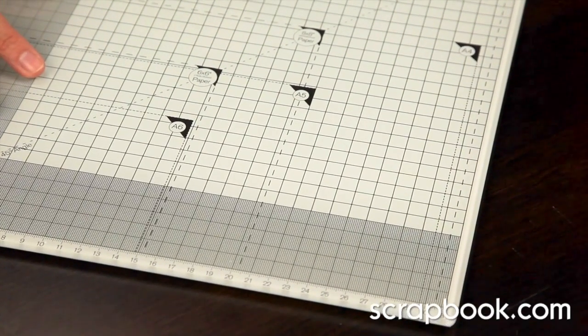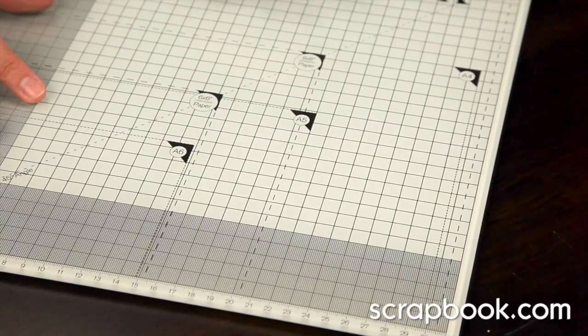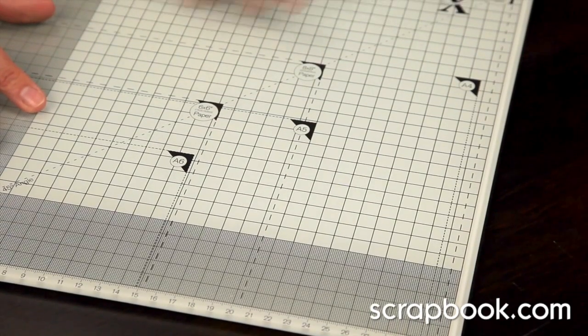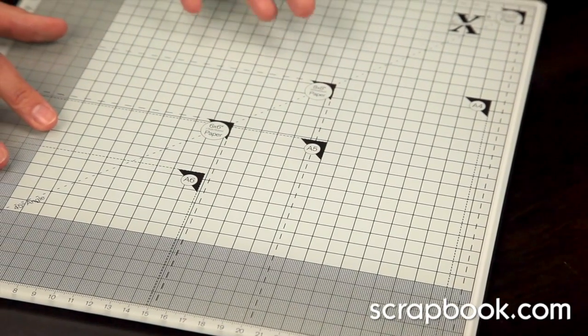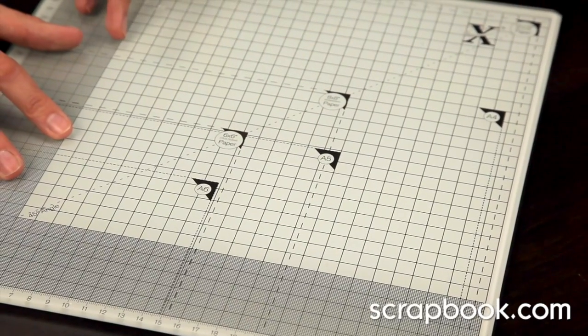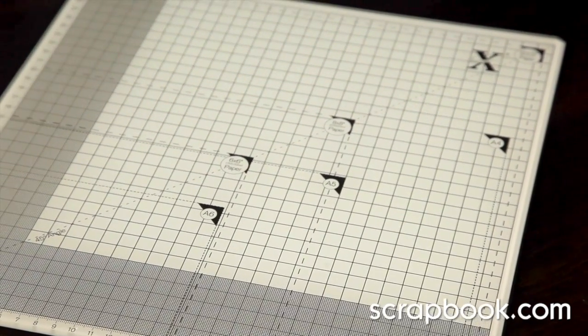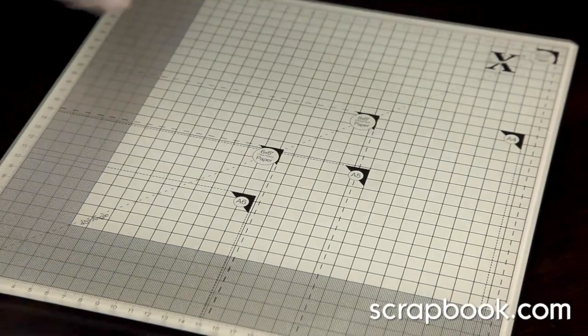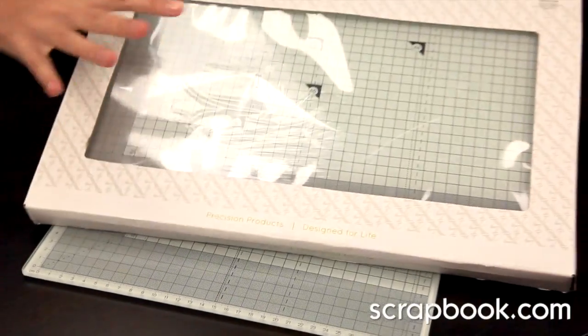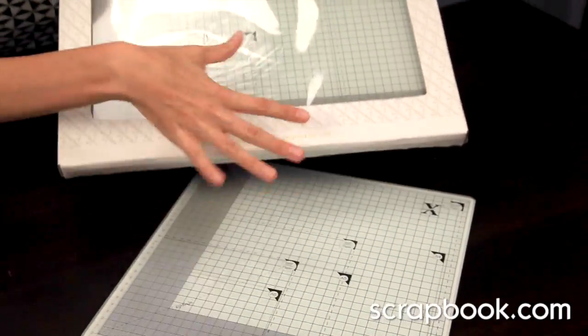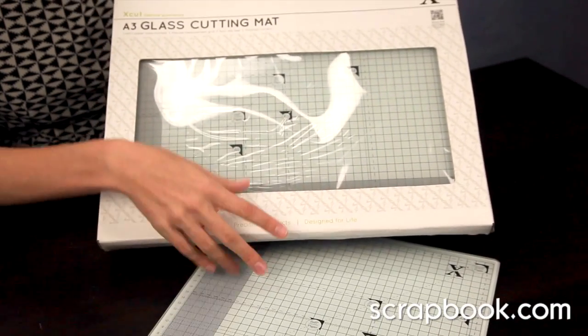This is great for a really serious crafter. And you can even do your inking or misting on this, and it will wipe clean with some warm soapy water. Sometimes people use baby wipes. And there's also the larger size available as well. This is the A3 size, so you can choose which size would work better for your crafting needs.